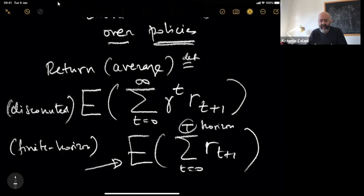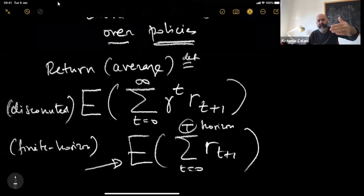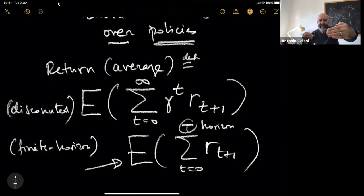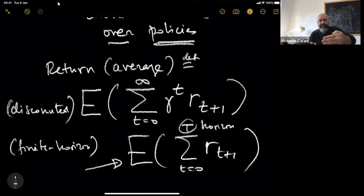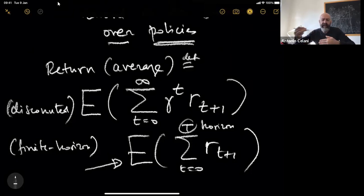One important thing is that if you set yourself a fixed horizon, your strategy will change over time. Suppose you have to turn in your homework in 10 days — you will do nothing on day one, day two, day three, and then on days eight and nine you do everything. Typically, if you have a finite horizon, the best strategy is to do something different in time. On the other hand, when you use the discounted version, we will see that you have stationary strategies over time — the best strategy is the same irrespective of when you start.